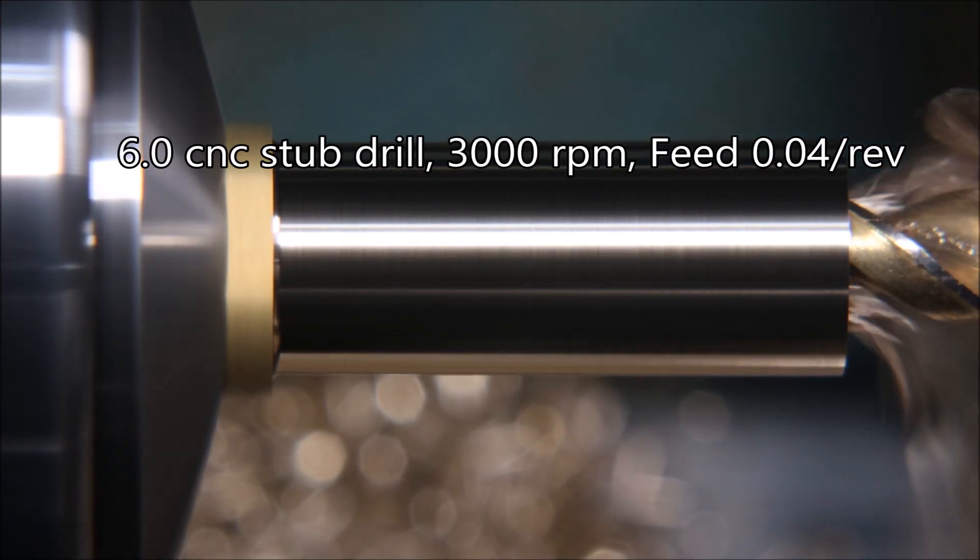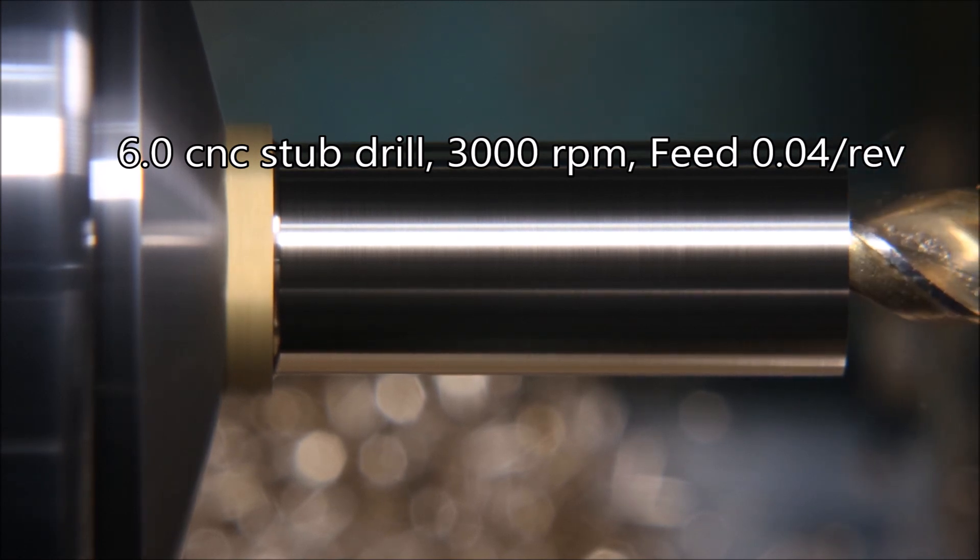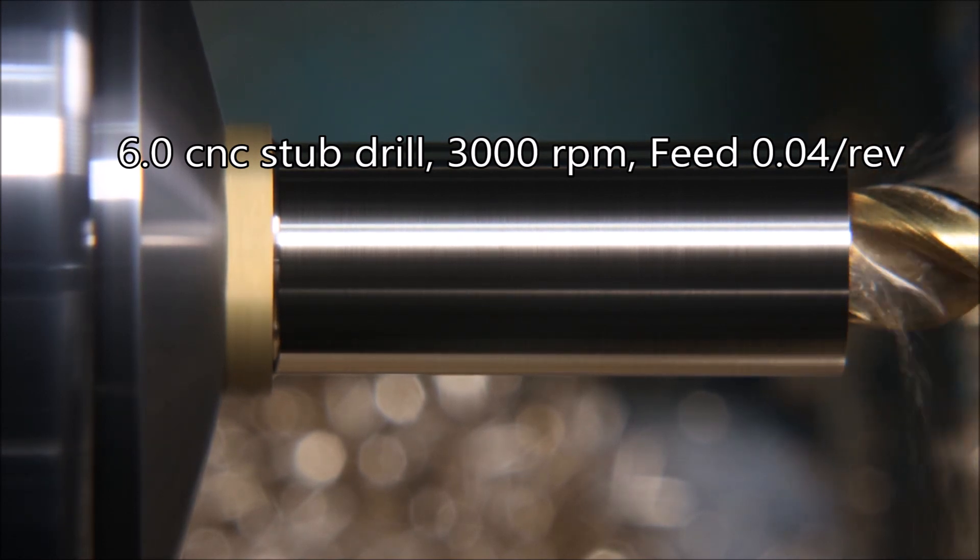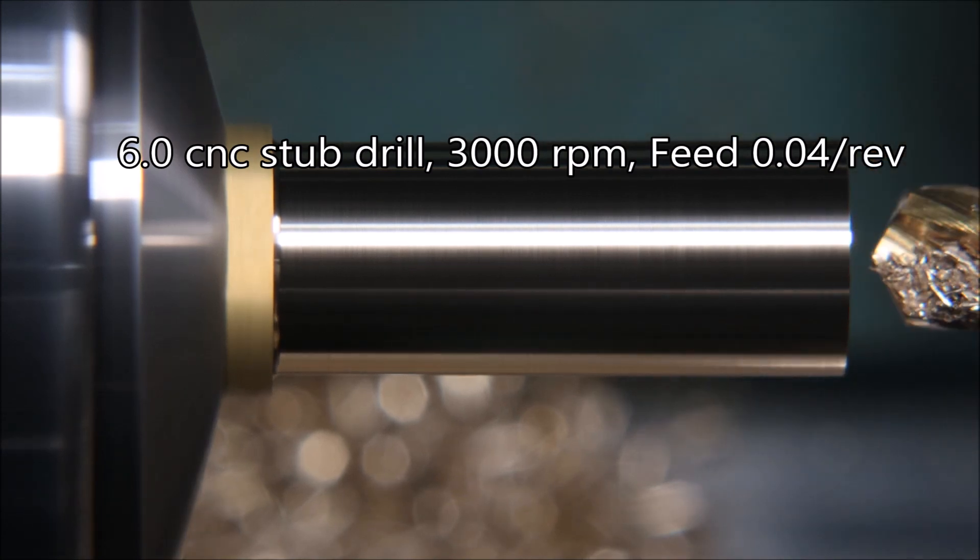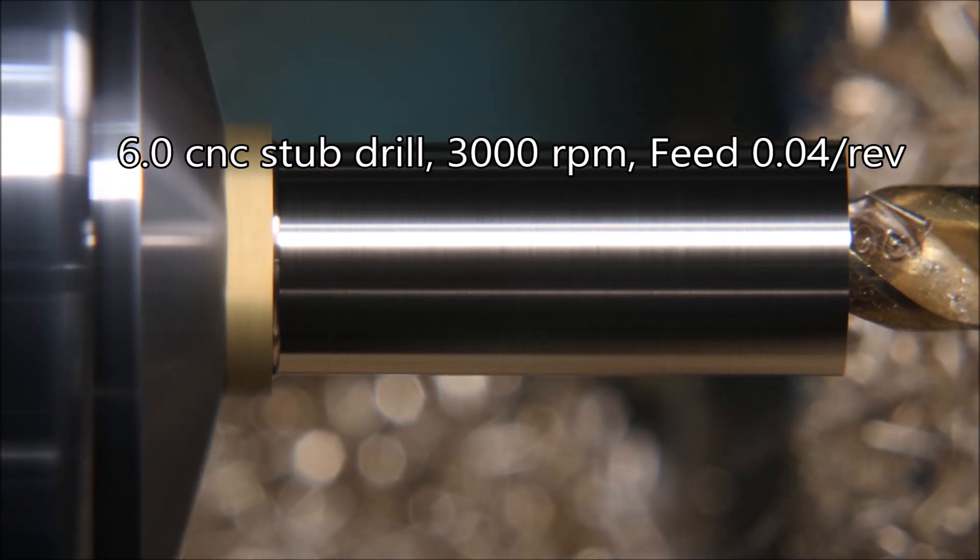Only using 0.04 feed per revolution. This lathe doesn't have the power to use the right feed - it should be about 0.1 per rev.